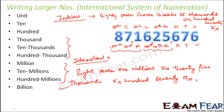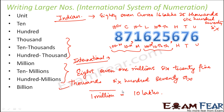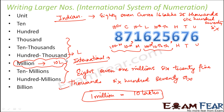If you try to establish a relationship between the Indian and international systems of numeration, you will find that one million is equal to ten lakhs. We know this because where the international system has hundred thousand is where the Indian system has lakhs, and where it has million is where the Indian system has ten lakhs. So one million equals ten lakhs.